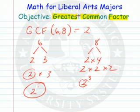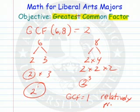If two numbers have a GCF of 1, then they are said to be relatively prime. In relation to each other, they are prime. Let's find another GCF of two numbers.